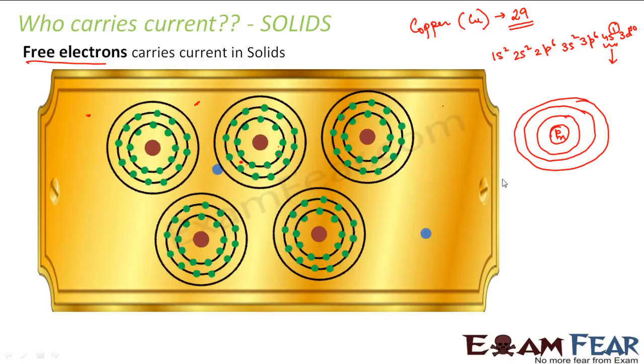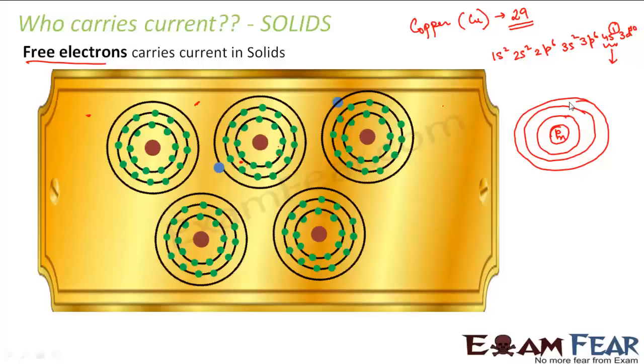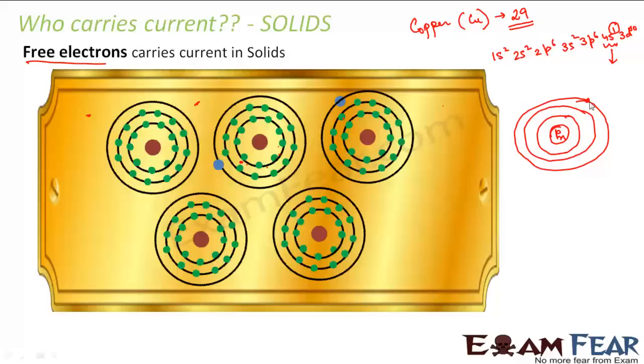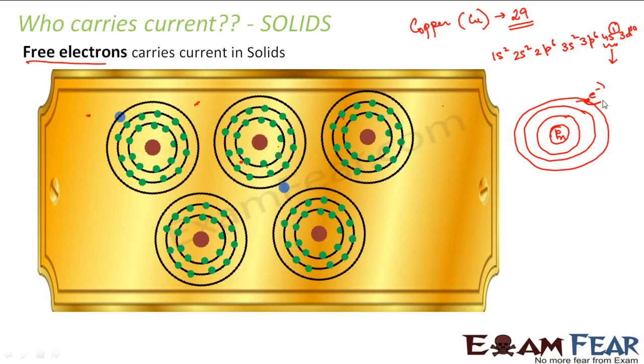So like this you have your different shells, and when you reach the outermost shell you find that there is just one electron in the outermost shell.